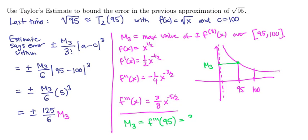So m3 is the third derivative evaluated at the point 95. That would be 3 eighths times 95 to the minus 5 halves power. It's worth noting though that the square root of 95 is what we're trying to approximate at the beginning. So this is a bad estimate right here.